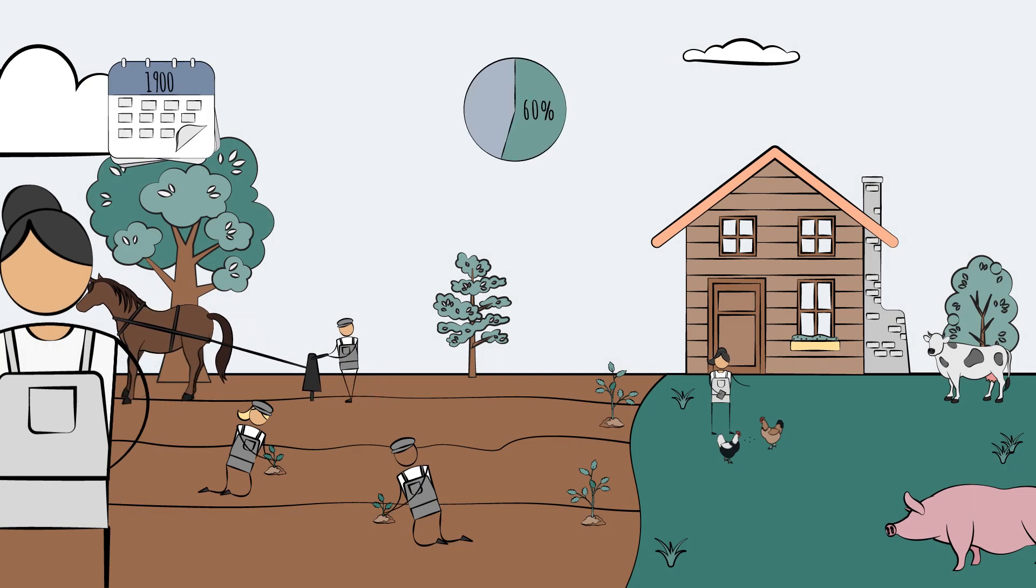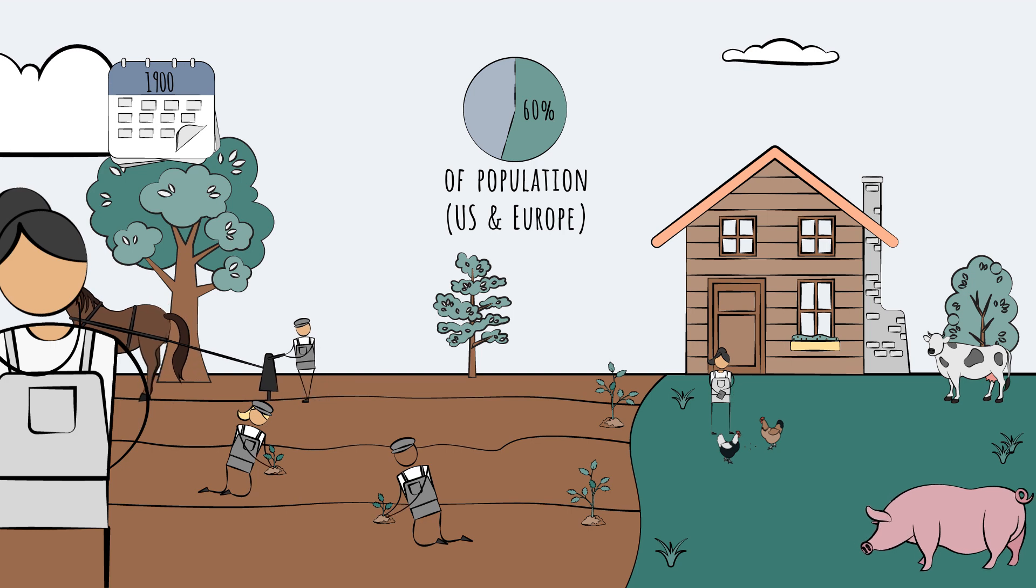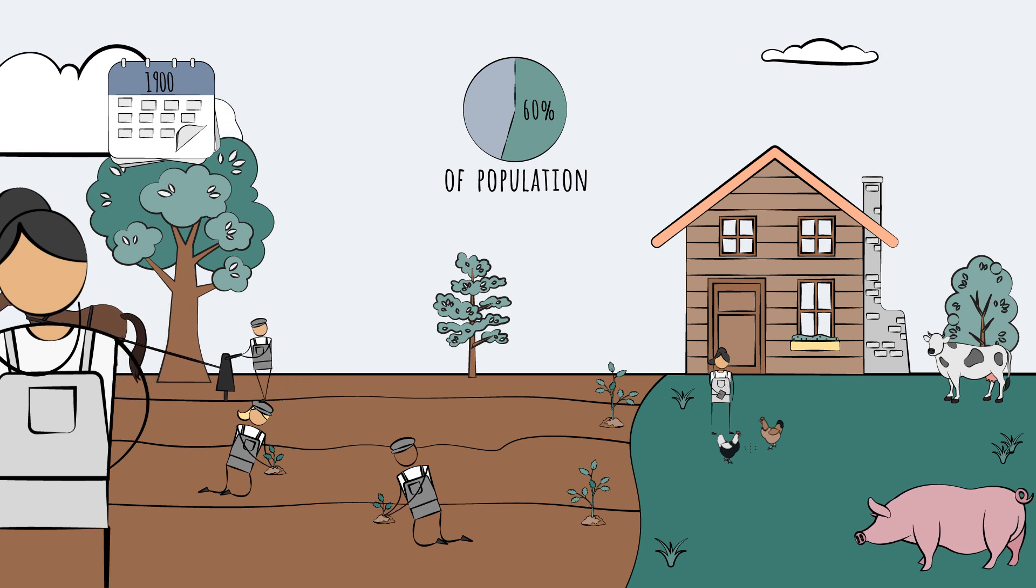Before 1900, nearly 60% of the people living in the U.S. and Europe were farmers. In other parts of the world, that figure was 75% or higher.